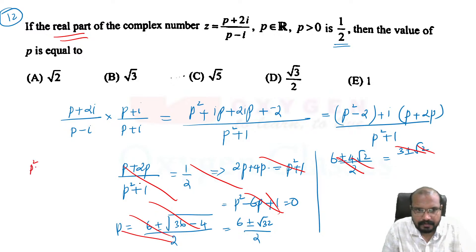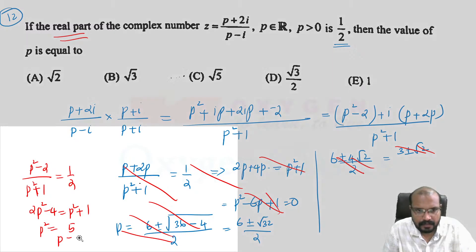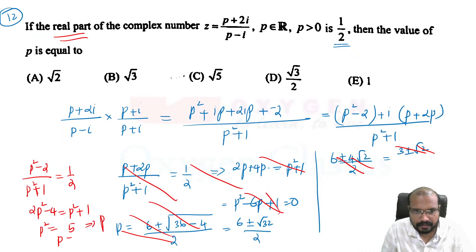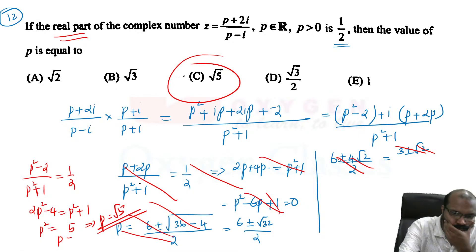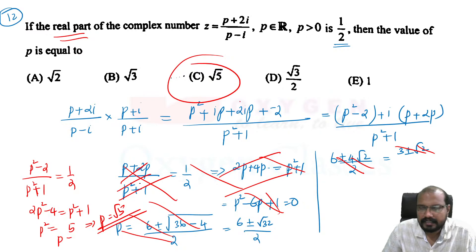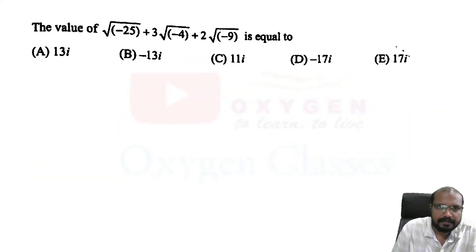The real part is p² minus 2 divided by p² plus 1. Setting p² minus 4 equal to p² plus 1, that gives p² equal to 5, so p is root 5. The real part is now written.